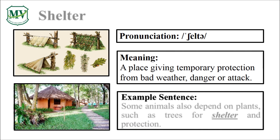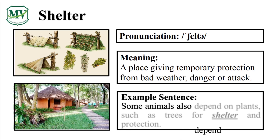Please repeat the word after me. Shelter. Good job! Let's spell it. S-H-E-L-T-E-R. Shelter. Great! Some animals also depend on plants, such as trees, for shelter and protection. Can you try reading the sentence on your own?